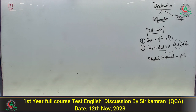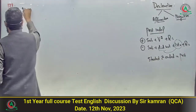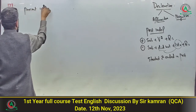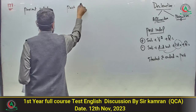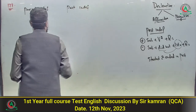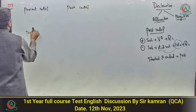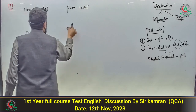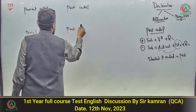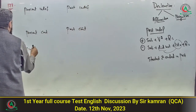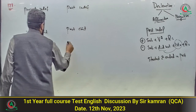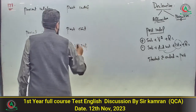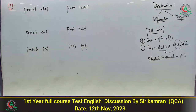Tense کو سمجھنا بہت ضروری ہے۔ ہمارے پاس ہے: present indefinite، past indefinite، present continuous، past continuous، present perfect، اور past perfect۔ Active to passive کے لئے دو چیزیں لازمی ہیں: helping verb + third form of verb۔ یہ جو بعض لوگ کہتے ہیں کہ passive کے لئے preposition 'by' چاہیے — یہ درست نہیں ہے۔